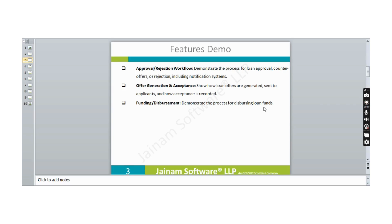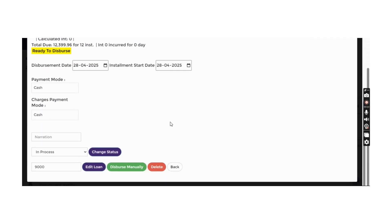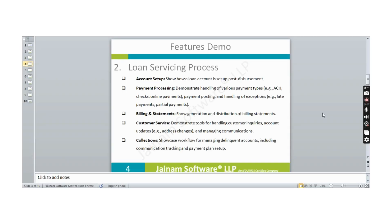When a loan is in the approval process, it can still be edited and the loan amount can be modified based on the customer's credit score. There are different methods for collecting repayments, and the accounting structure handles billing and different financial statements.